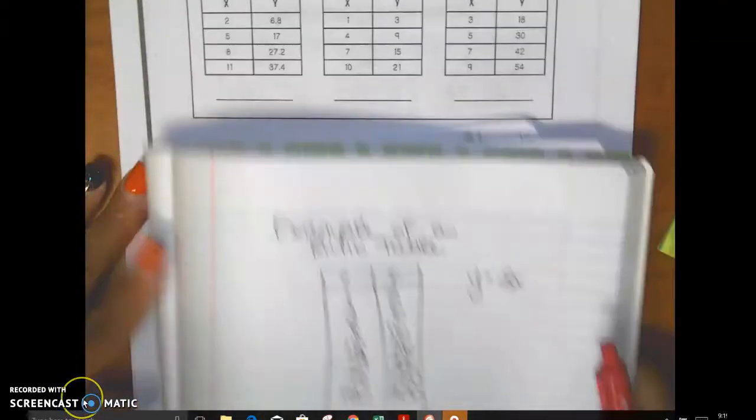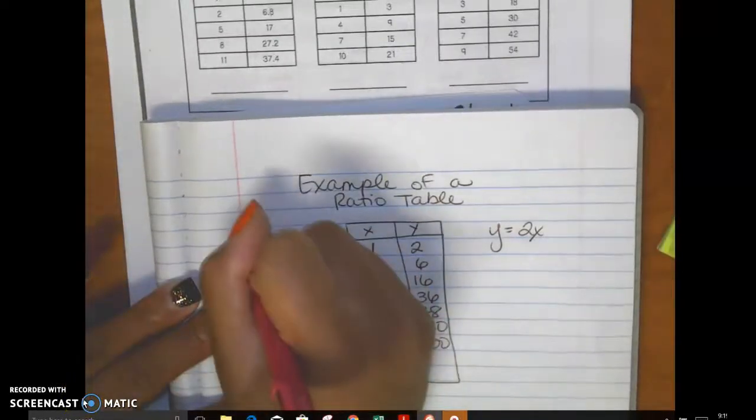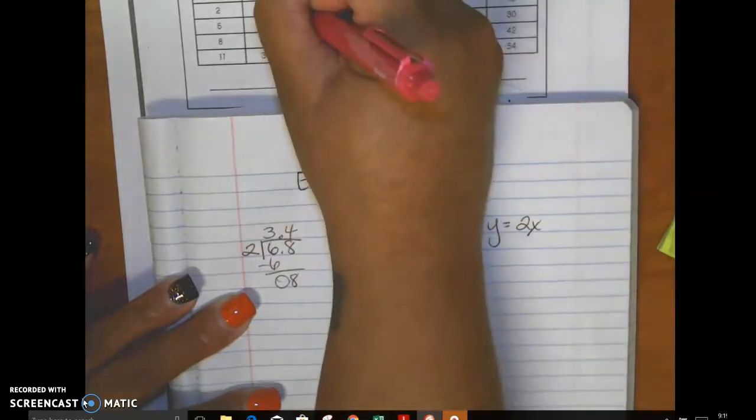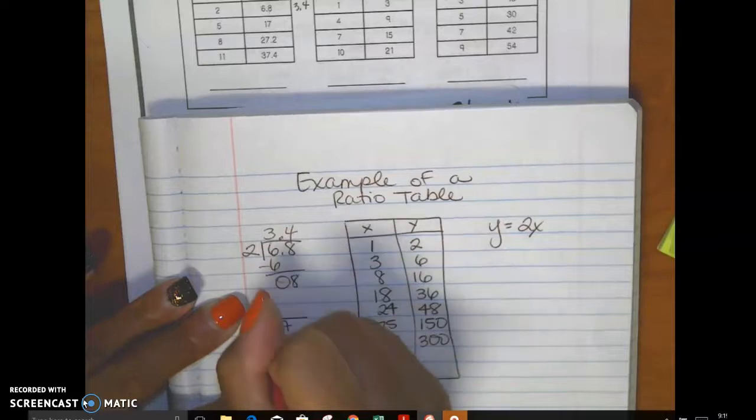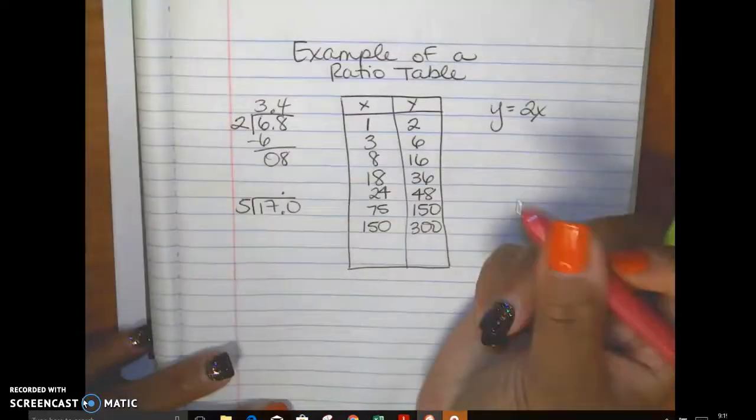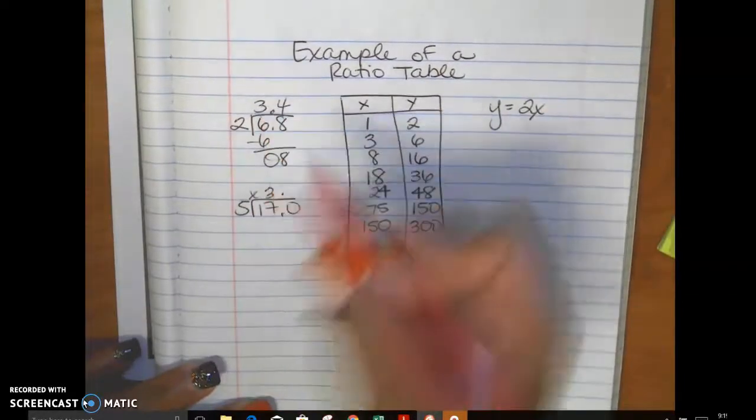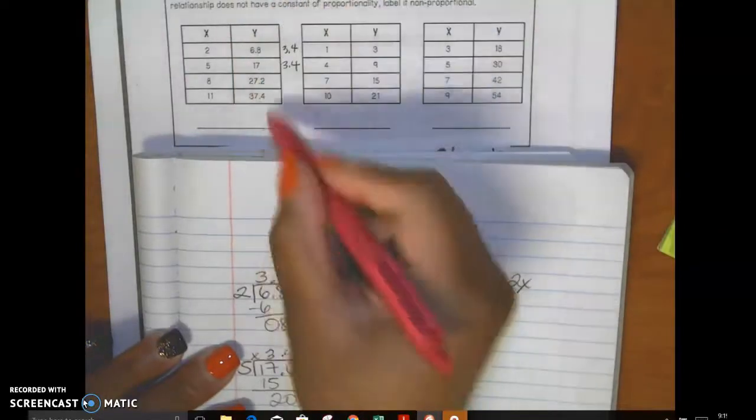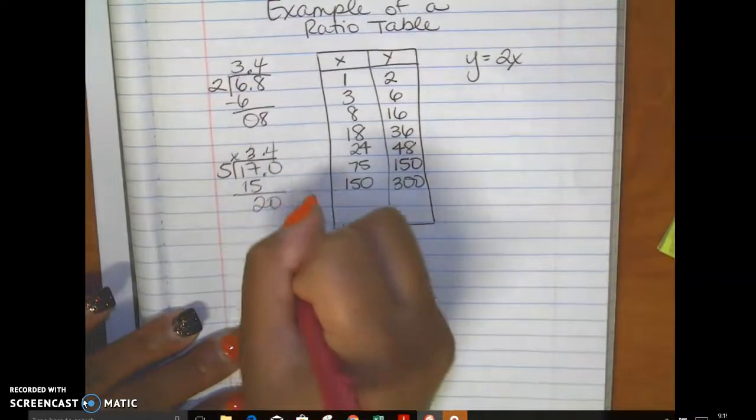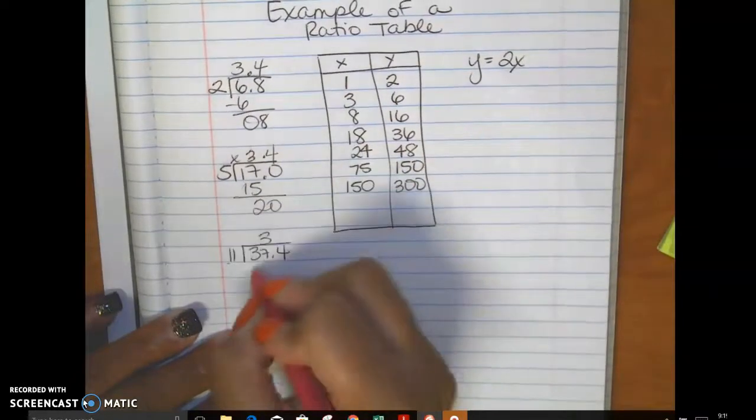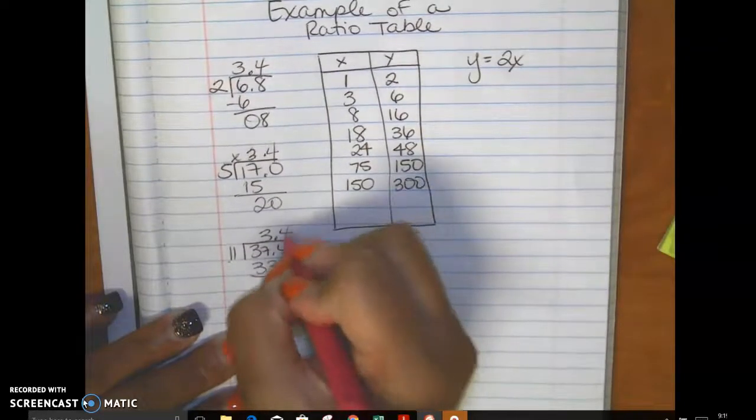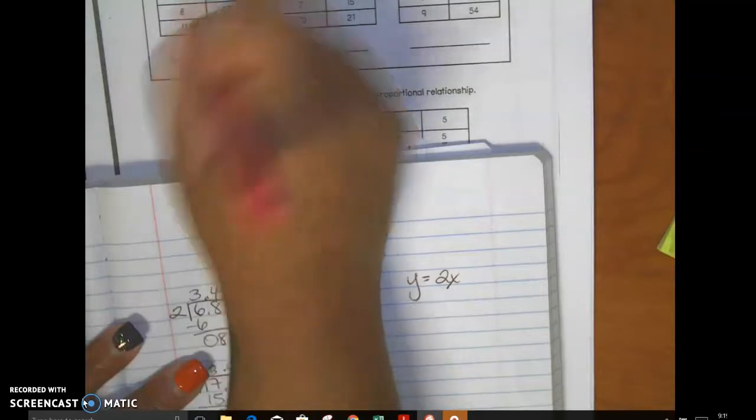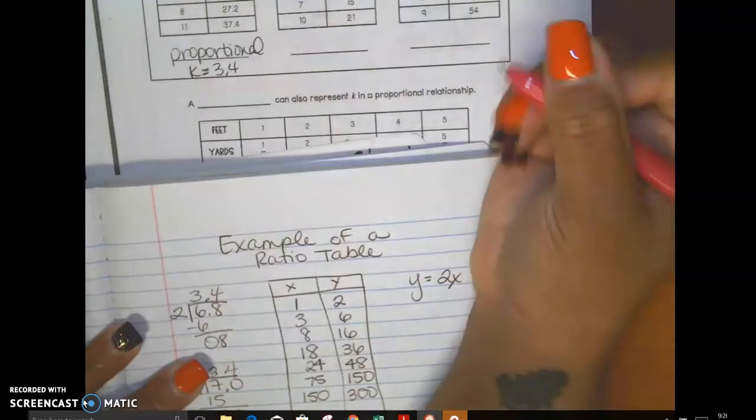Alright, so the first one I'm dividing 6.8 by 2. So 6.8 goes in, 2 goes out. 2 goes into 6 three times. 6, 0, 8, that's 3.4. So this is 3.4. I'm just going to write it to the side. 17 divided by 5. I know this won't go in evenly so I'm going to put a decimal and a 0. 5 goes into 17 three times. So far so good. 15, 20, and that's 4, so 3.4. Okay, let's try 37 and 11. Well, 37.4 divided by 11. 11 goes in here 3 times, that's 33, 44, 4. So yes, this is proportional and k is 3.4. k equals 3.4. That's my constant of proportionality.